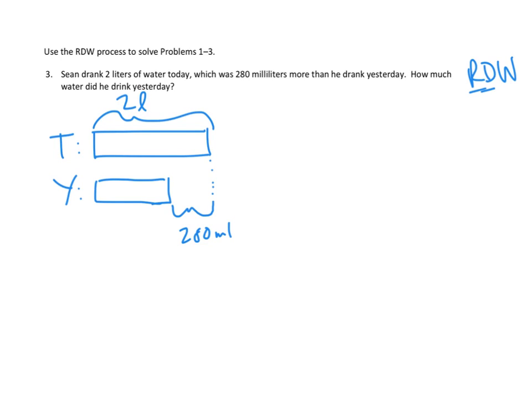So we have to do a subtraction problem, right? We know how big the big box is. We know how much less the small box is. So if we do this minus this, we'll get this. But we've got a problem. We've got different units. Two liters minus 280 milliliters. Well, we can't just subtract unlike units. The question isn't two minus 280, right? It's two liters minus 280 milliliters. Different units.